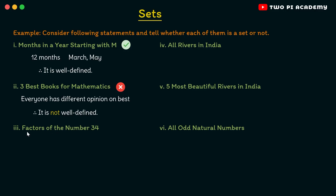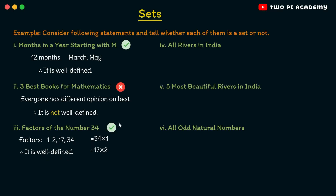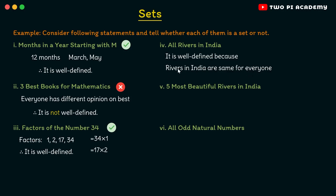The third example: factors of the number 34. You know that 34 can be written as 34 × 1 or 17 × 2, which means it has 4 factors: 1, 2, 17 and 34. Every person will arrive at the same 4 factors, which means it is well-defined and hence a set. And then we have all rivers in India — this is well-defined because the rivers in India are the same for everyone. If a river is in India then it is in the set, so all rivers in India is a set.